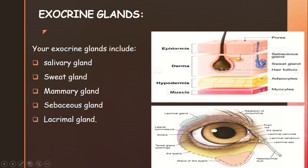The lacrimal gland produces tears. It is connected via the nasolacrimal duct — 'naso' refers to the nose, meaning there is a connectivity between the lacrimal gland and the nasal passage through the nasolacrimal duct. The tears produced are released through this duct. This is an exocrine gland because it releases its product via a duct.